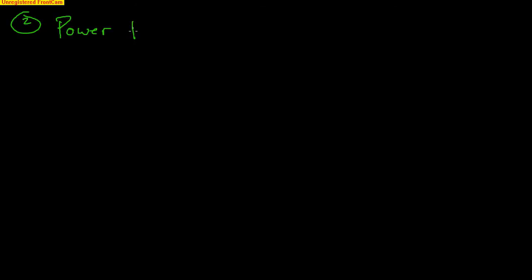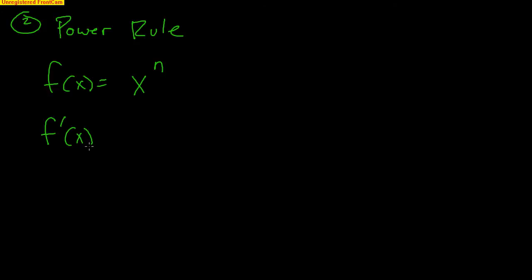The second rule is called the power rule. The power rule is a really pivotal one that's going to be used a lot, but it's very simple. If you have a function that's x raised to a power n, to find the derivative, that n falls down in front of the function, and then the exponent becomes n minus one. So your exponent literally falls down in front, and then you do exponent minus one to get your new exponent. That is the power rule — very simple yet very powerful.